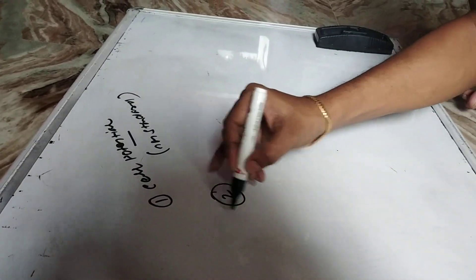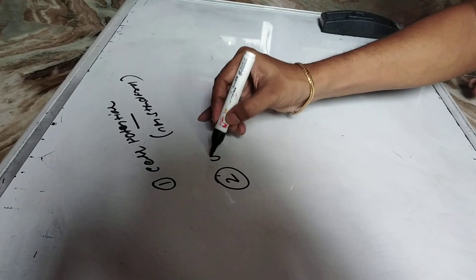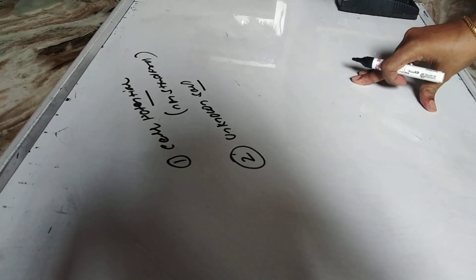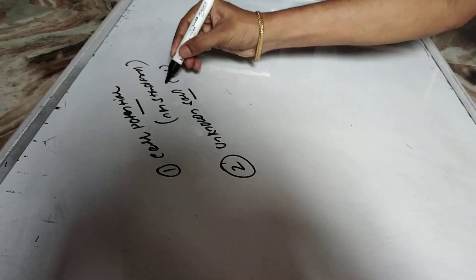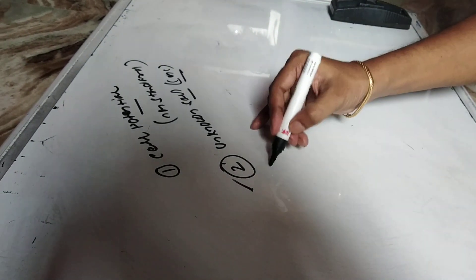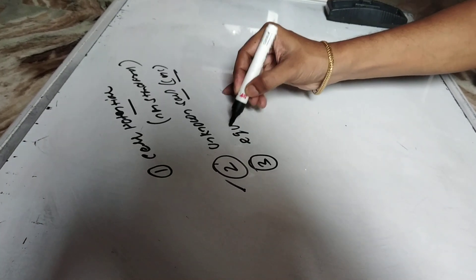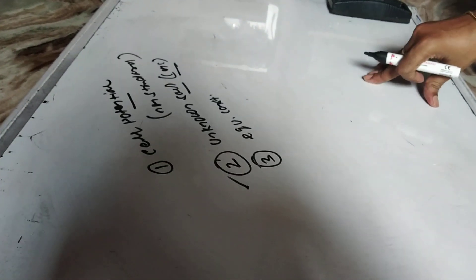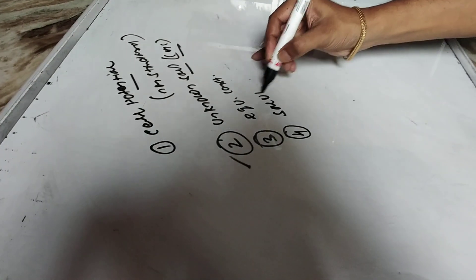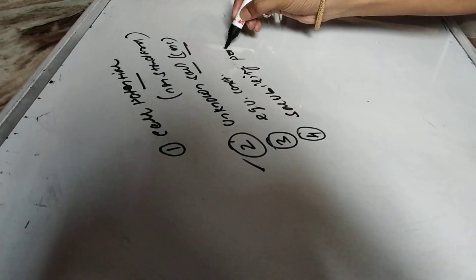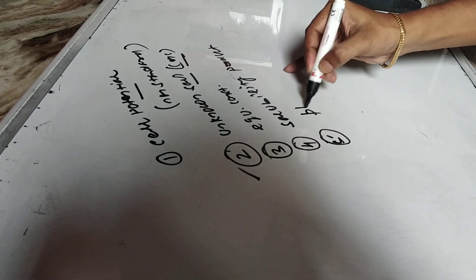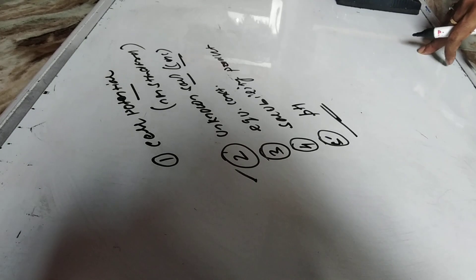Number 2: it also helps to calculate the concentration of an unknown solution. Number 3: it helps to calculate the equilibrium constant of a reversible cell reaction. Number 4: it also helps to calculate the solubility product. Number 5: it also helps to calculate the pH of an unknown solution present in the electrolyte.